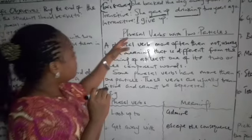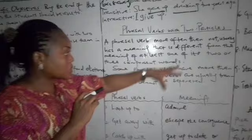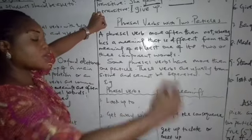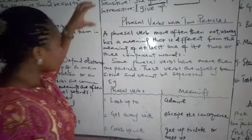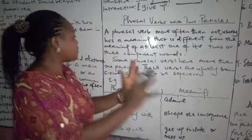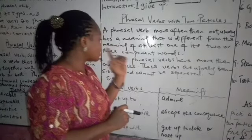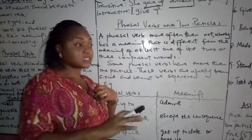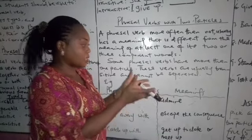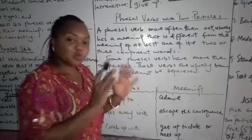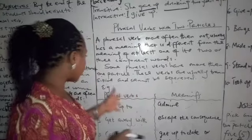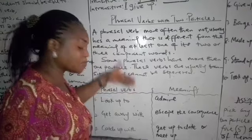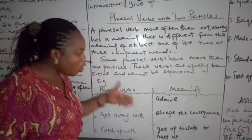Now let's move down. Phrasal verb with two particles. This is the reason why we are here today. The two particles. It talks about a phrasal verb, a verb combined with more than one particle. More than one preposition or more than one adverb. A phrasal verb more often than not has a meaning that is different from the meaning of at least one of its two or three component words. Because the meaning of the phrasal verb, as I said before, is quite different. Most often, these are the ones that are problematic. Some phrasal verbs have more than one particle. These verbs are usually transitive and cannot be separated. Now, this is what I'm talking about. These ones cannot be separated. And they are always transitive. They act on an object.